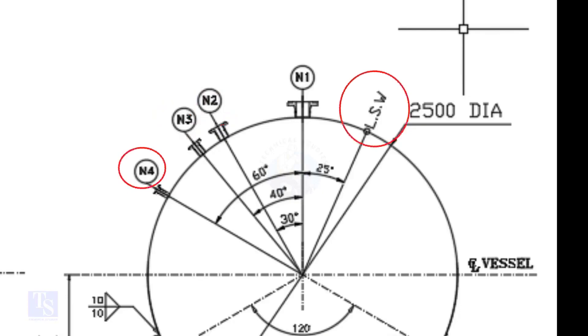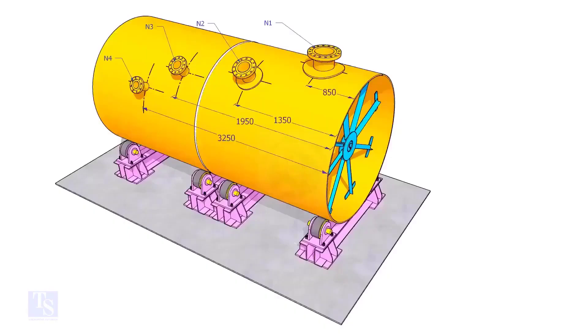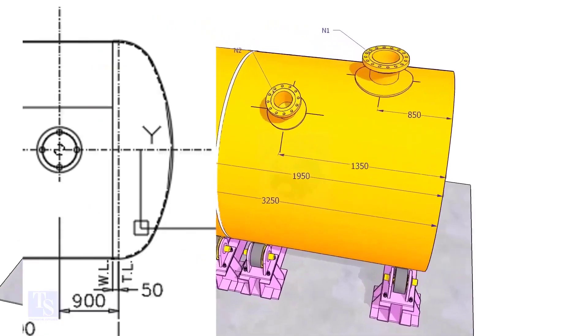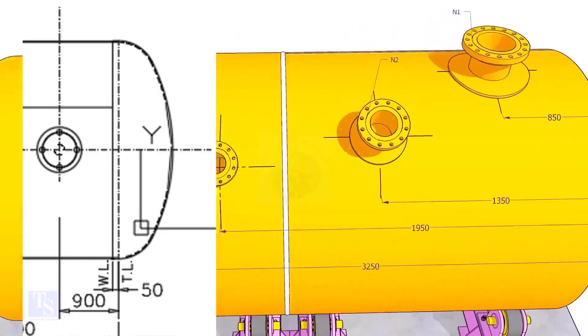Nozzle N1 is turned 25 degree from LSW. As the straight face 50mm is on the dish end, we need to subtract 50mm from the overall dimension.